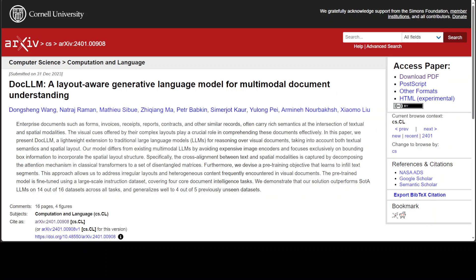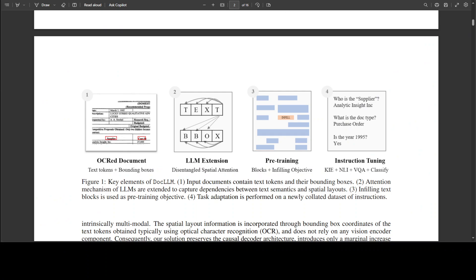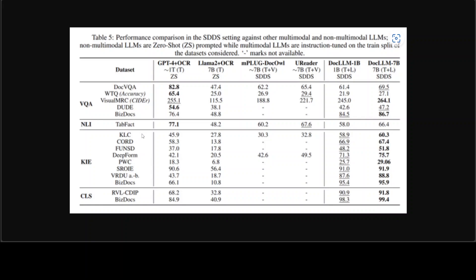Doc LLM's 7 billion parameter model outperforms other state-of-the-art LLMs on 12 out of 16 benchmarks within 4 core document AI tasks. You can see that Doc LLM, at the very end, has already outperformed various other models such as Doc LLM 1 billion, LAMA 2, GPT-4, and OCR, in all of these benchmarks highlighted in bold. The difference is quite huge too, which is quite incredible.